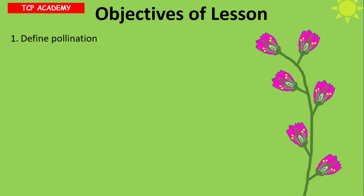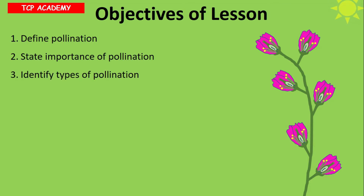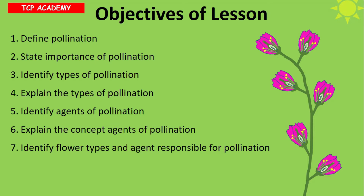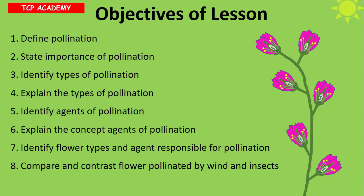The objectives of today are to define pollination, state the importance of pollination, identify and explain the types of pollination, identify and explain the concept of agents of pollination, identify flower types and agents responsible for pollination, and compare and contrast flowers pollinated by wind versus those pollinated by insects.